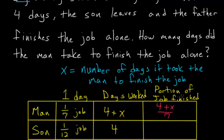And the portion of the job that the son finishes is four times one-twelfth. So four-twelfths, because he finishes one-twelfth of a job per day, and he works four days. Four-twelfths simplifies to one-third.